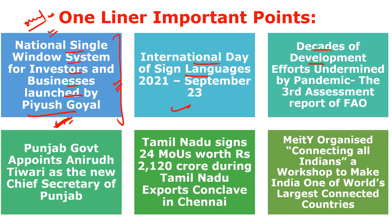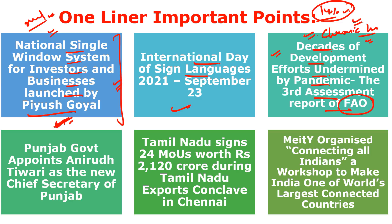Decades of development efforts have been undermined by the pandemic according to the third assessment report of the Food and Agriculture Organization. COVID-19 has set back progress towards the Sustainable Development Goals enshrined in the UN Agenda 2030. The pandemic has increased the burden of chronic hunger and disrupted food supply, with around 14% of all food being lost. FAO was established in 1945, headquartered in Italy, and its Director-General is Qu Dongyu.